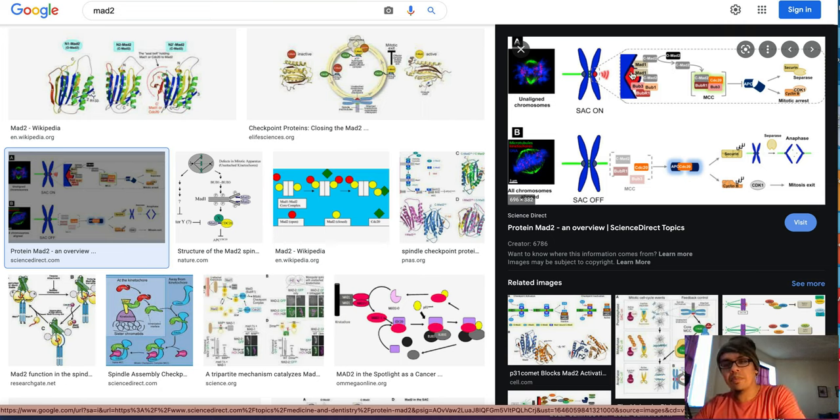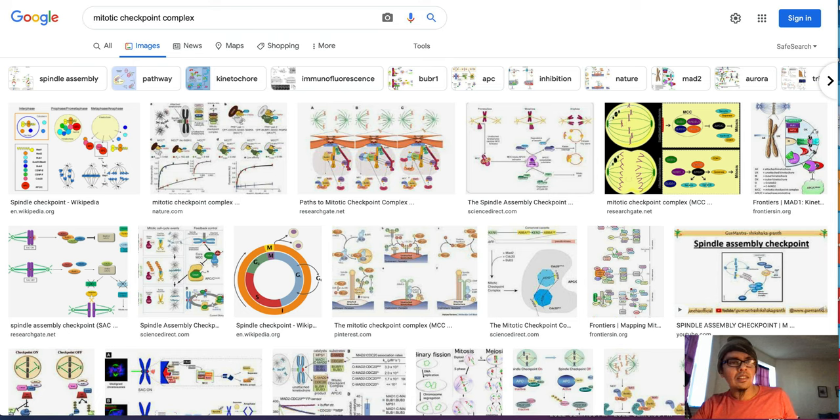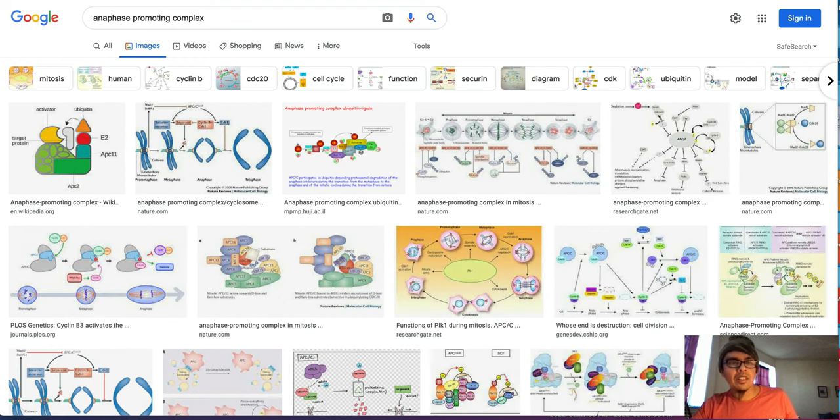So essentially what happens is, for the unattached kinetochore you have Mad2, and then as the attachments occur—this is a greatly simplified description that I'm giving you—as the attachments occur, this Mad2 essentially gets kicked off this kinetochore and then it combines with a protein called Cdc20 and a few other proteins. But essentially this Mad2 combines with Cdc20, and at that point it becomes activated into something called the mitotic checkpoint complex. That mitotic checkpoint complex then binds with something called the anaphase promoting complex, which then goes on to do the rest of the work of anaphase.